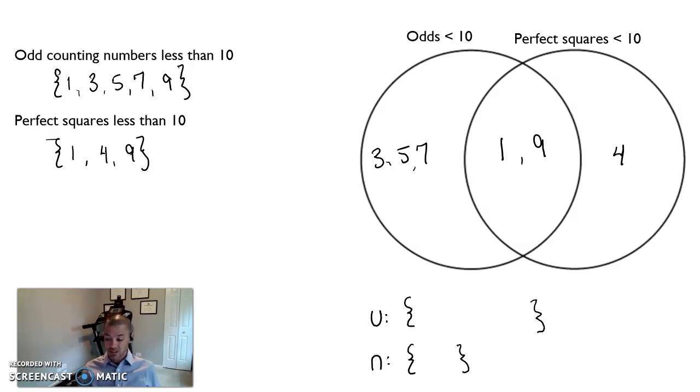So if it's in the intersection, you just really are listing every item that's inside the Venn diagram. It's typical to write those down in if they're numbers in numerical order. So in this case, the union would be one and three and four and five and seven and nine.